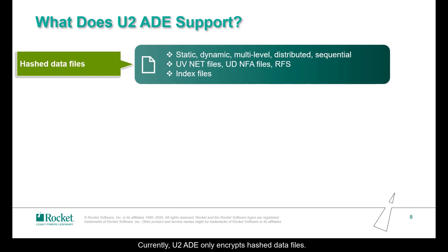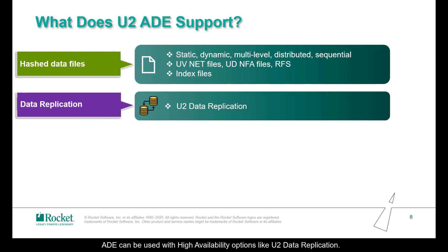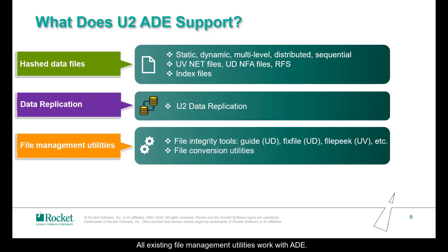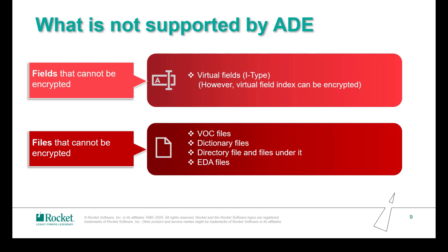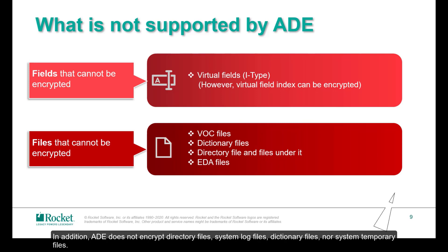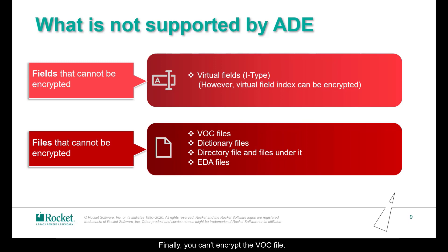Currently, U2 ADE only encrypts fast data files. ADE can be used with high availability options like U2 data replication. All existing file management utilities work with ADE. You can use the backup and restore utilities to back up and restore data encrypted with ADE. It can also support some clients like ODBC, JDBC, and SB Cloud. Unidata and Universe can't encrypt virtual fields. In addition, ADE doesn't encrypt directory files, system log files, dictionary files, nor system temporary files. Finally, you can't encrypt the work file.